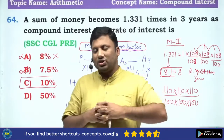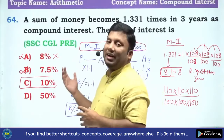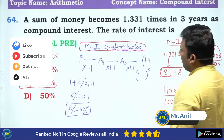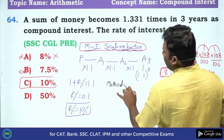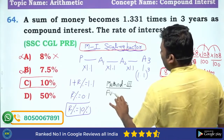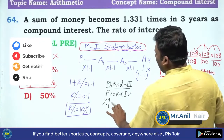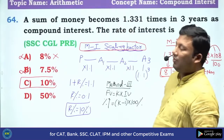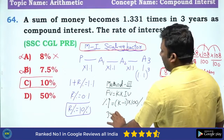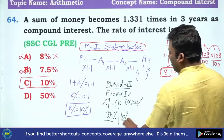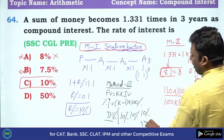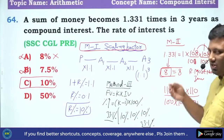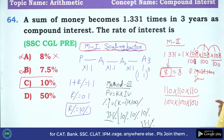There are good chances that when you are writing the examination under exam environment, you might forget the traditional method. That is one of the reasons why I give you a lot of concepts. Method 1 is scaling factor, Method 2 is digital sum, Method 3 is overall change. Final value is 1.331 times initial value, so overall change = (1.331 − 1) × 100 = 33.1%. Taking 10% three times: 10 + 10 + (10 × 10)/100 applied again gives 33.1%. Depending upon your comfort zone, you can take any method.